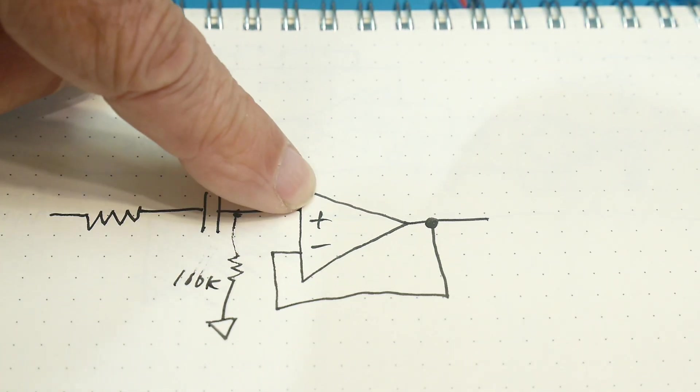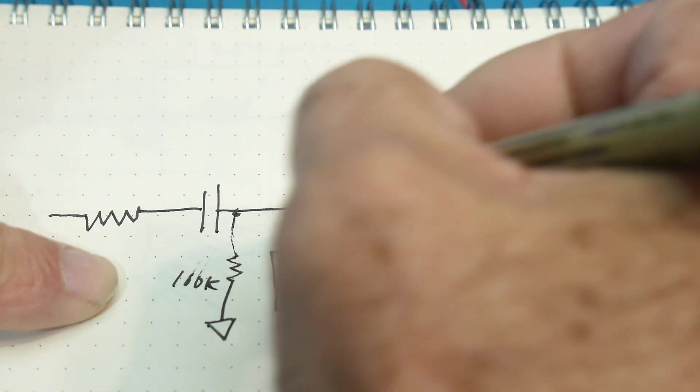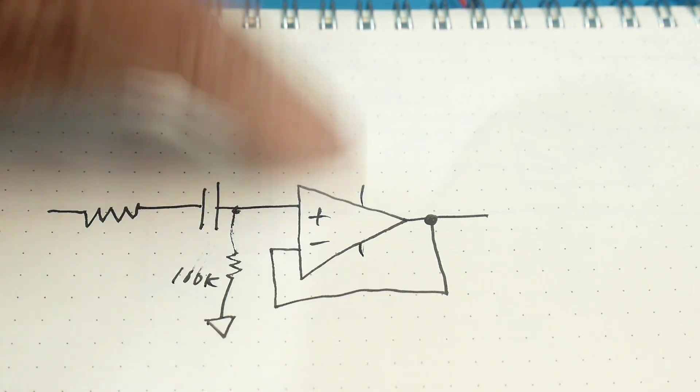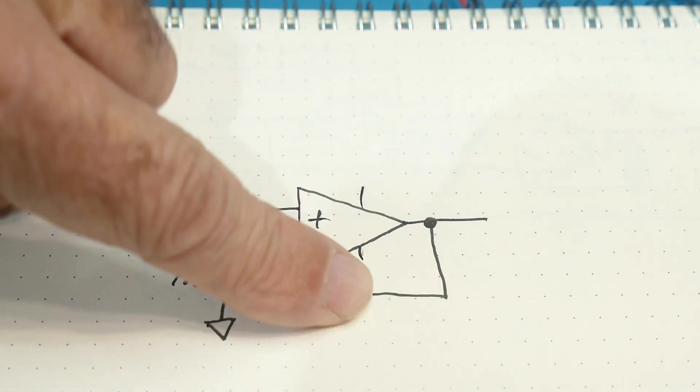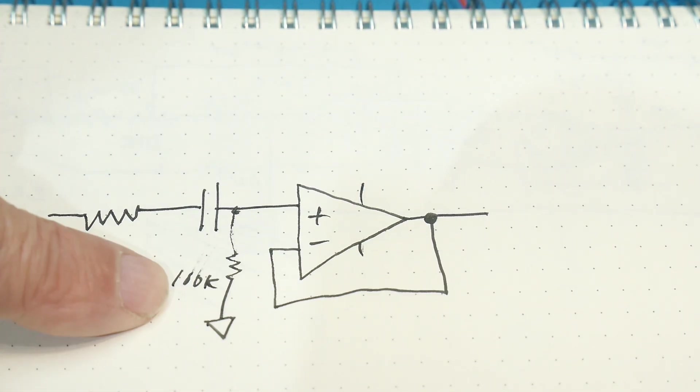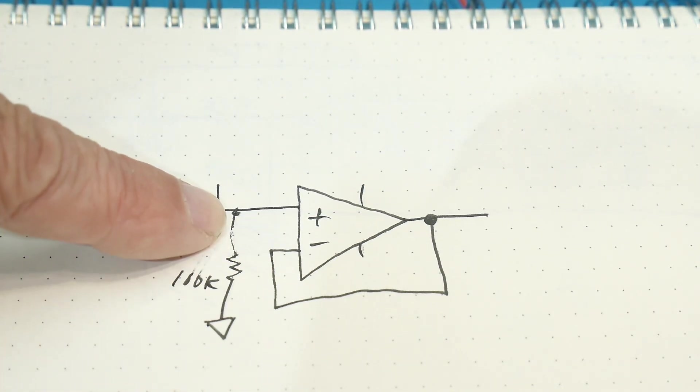And so we're going to put a 100k resistor here. And all that does is it forces this input to ground. Remember this thing is running plus or minus VCC, plus 12, minus 12.